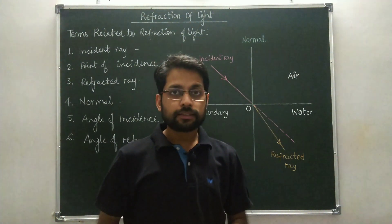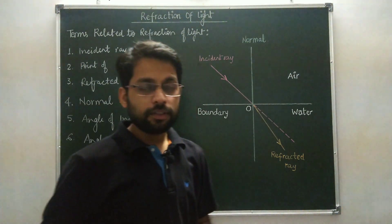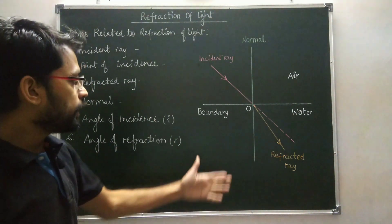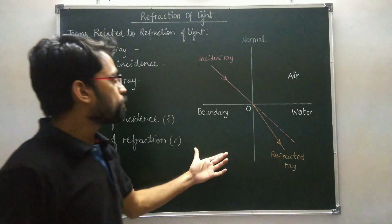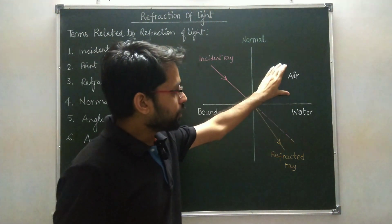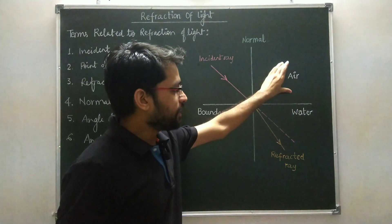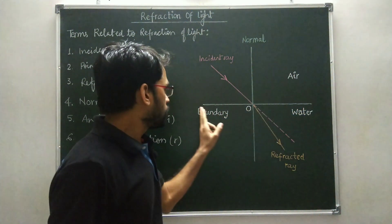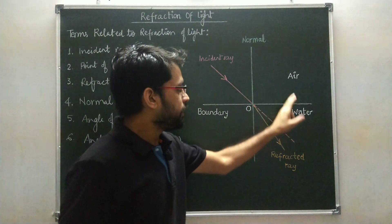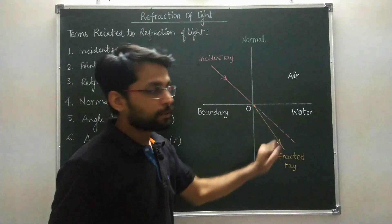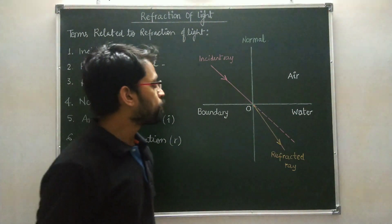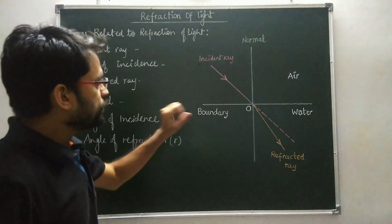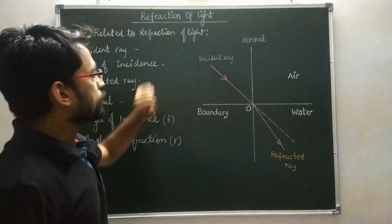I am going to discuss the terms related to refraction of light. In the diagram, we have two transparent mediums — one is air and the other is water — and this is the boundary separating the two mediums. There are some terms associated with the refraction of light.